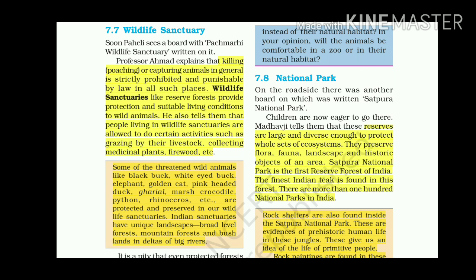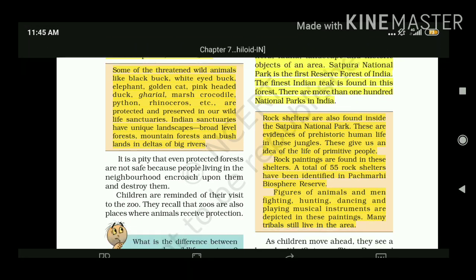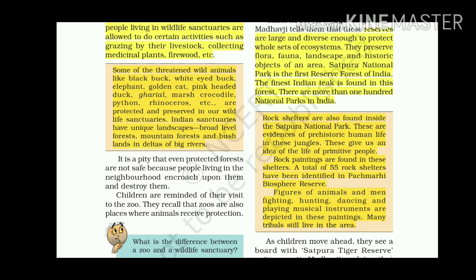Indian sanctuaries have unique landscapes — broadleaf forests, mountains, and bush lands in deltas of big rivers. It is a pity that even protected forests are not safe because people in the neighborhood encroach upon them and destroy them. Children are reminded of the zoo, which is also a place where animals receive protection.